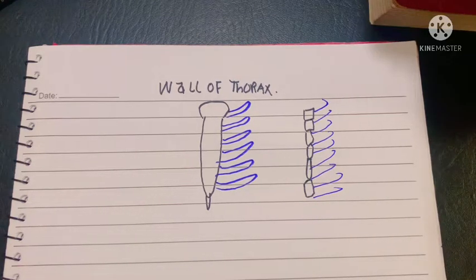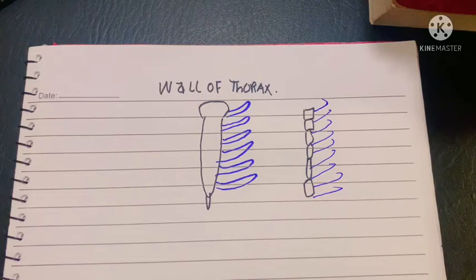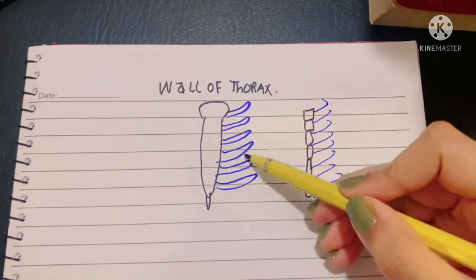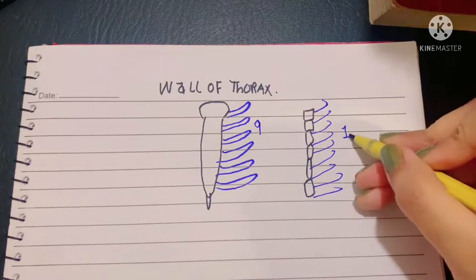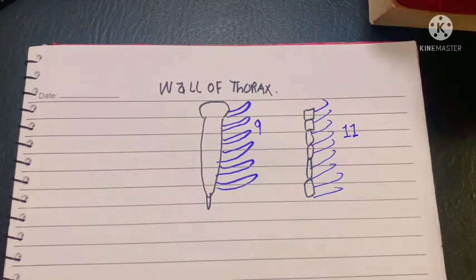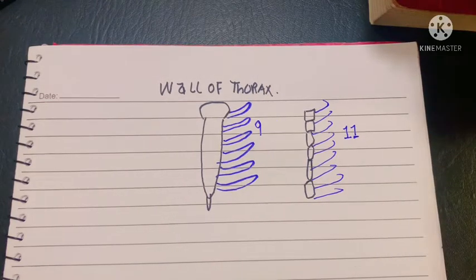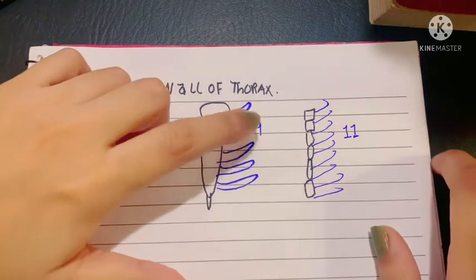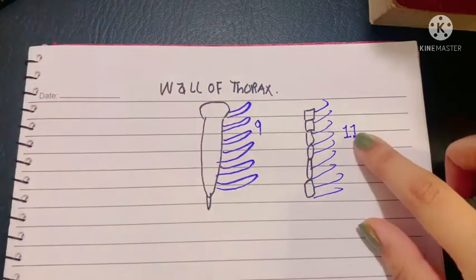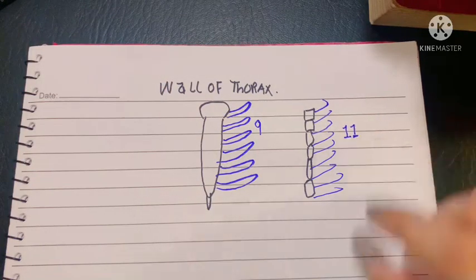Before I get started, I would like you to know that there are about 9 intercostal spaces anteriorly and 11 intercostal spaces posteriorly. The intercostal spaces are the spaces between the adjacent ribs. So anteriorly there are nine of these spaces while posteriorly there are 11.